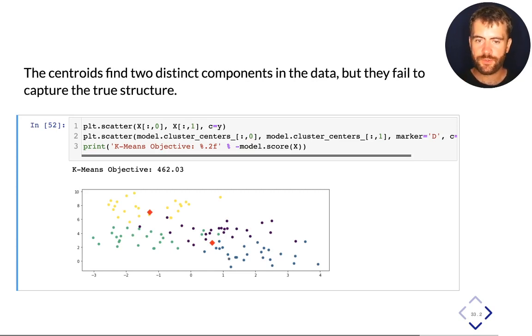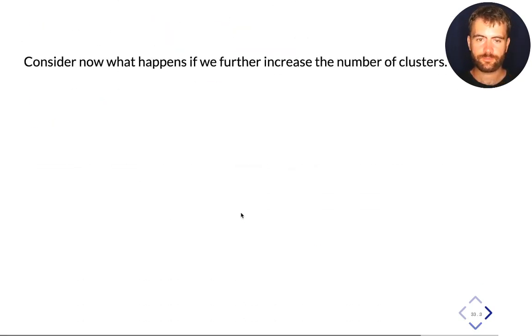There's actually more richness and we haven't really found the entirety of the structure. And also, if we look at our objective here, it has this value and I'll come back to this value. But here we have the value around 462 for this particular clustering.